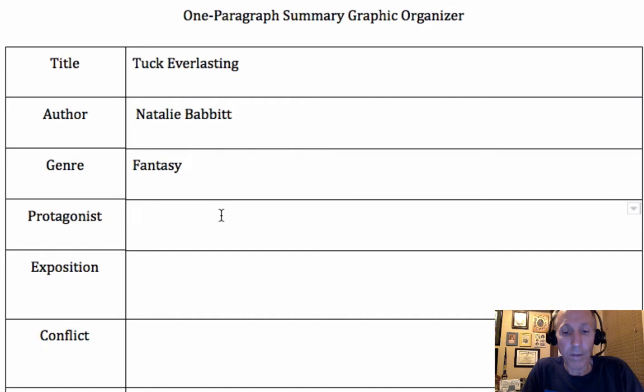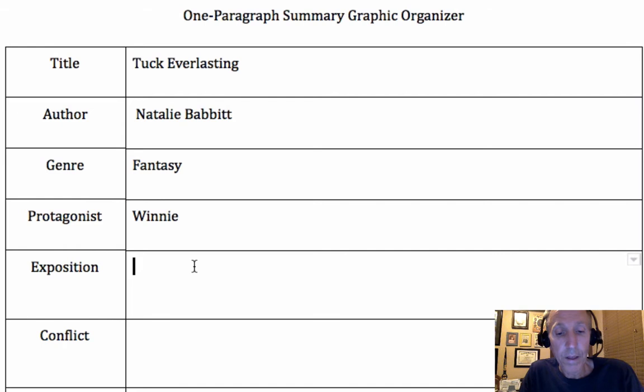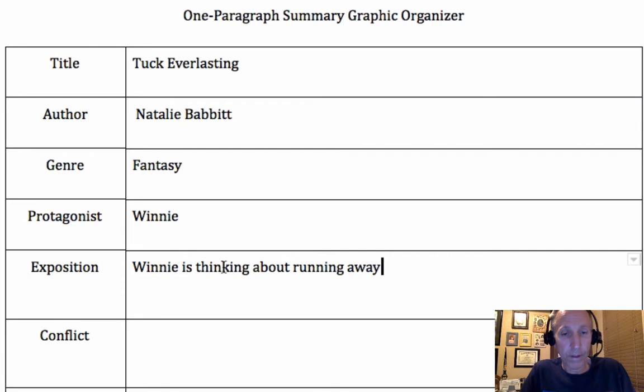All of you got Winnie as your protagonist. For the exposition, some of you got a little confused. If you forget what any of these one-paragraph summary elements are, I have those videos linked in Google Classroom — each one is two to three minutes long. The exposition is that Winnie is thinking about running away. She's not very happy with her life; she's pretty disappointed that her parents and grandmother are always controlling her.